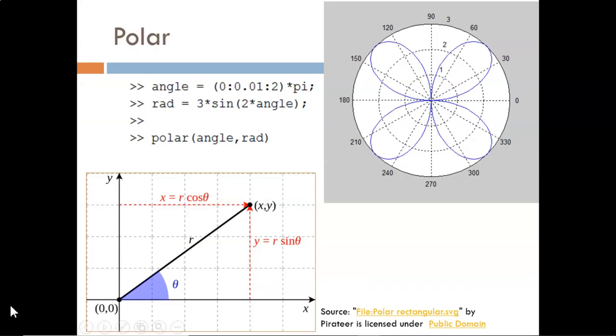The polar function plots data in polar coordinates. Most of us are very familiar with Cartesian or rectangular coordinates, where two dimensions define the horizontal movement and the vertical movement. With polar coordinates the two dimensions are distance from the origin and angle, with the angle being measured counterclockwise starting at the positive x-axis.